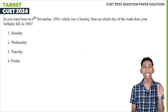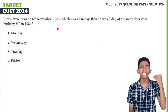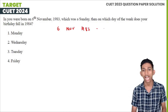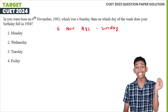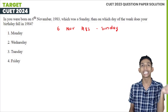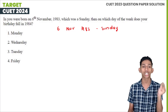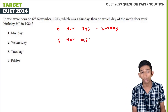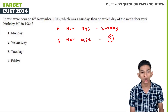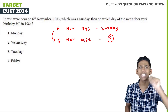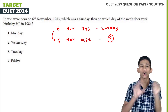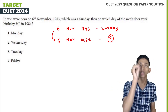If you were born on 6th November 1983, and that day was a Sunday, on which day of the week does your birthday fall in 1984? This is a calendar-type question. It's a very easy question. We need to discuss the concept of a leap year here. After looking at 1984, we see it is a leap year.